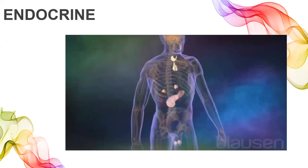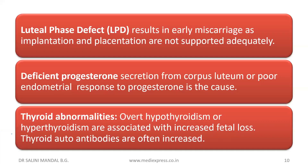Next, let's go to the endocrine factors. Luteal phase defect results in early miscarriage as implantation and placentation are not supported adequately. In luteal phase defect, the corpus luteum is deficient, which normally helps in implantation and placentation. When it is not functioning, the zygote cannot implant properly and placentation will not be supported — resulting in abortion.